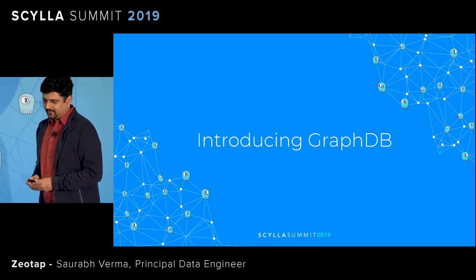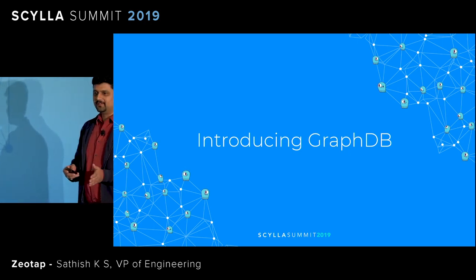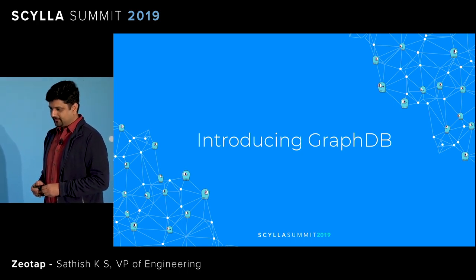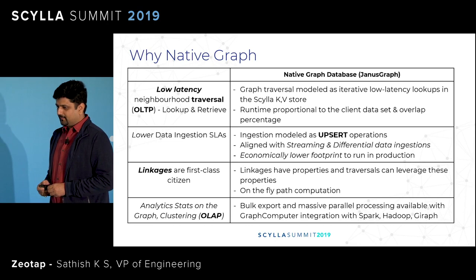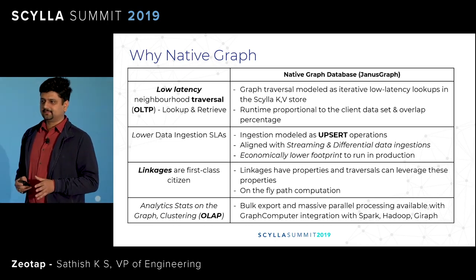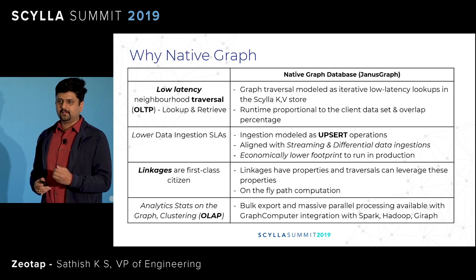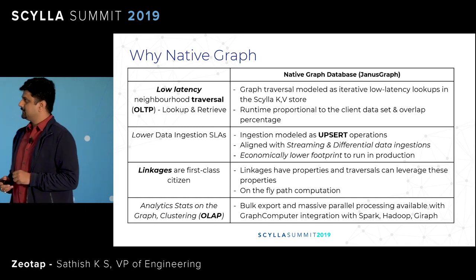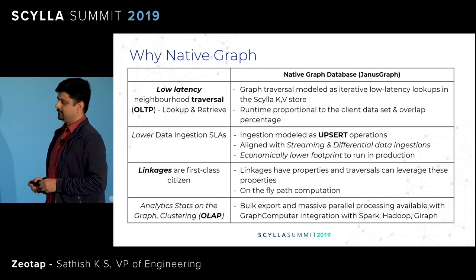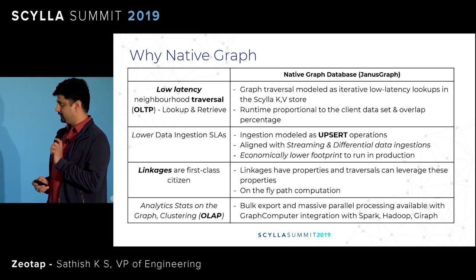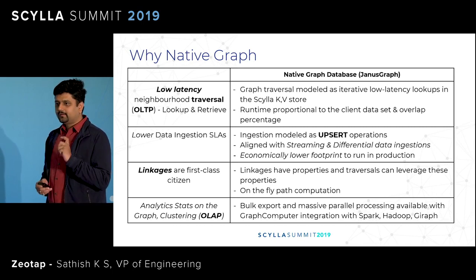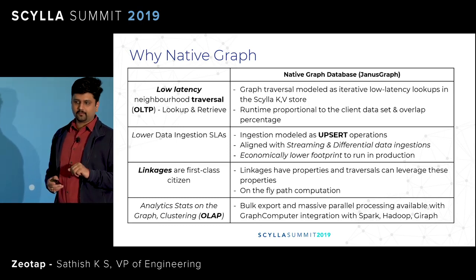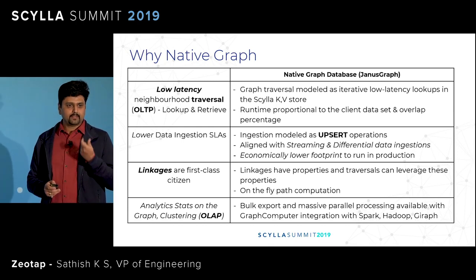I'll be mostly taking care of the data modeling and the data store selection. Let's start with introducing GraphDB. As mentioned, the context is about reaching the maximum number of IDs which are directly or indirectly connected to an input ID. A graph database suffices for us because it gives us four properties. The foremost requirement is that we should be able to traverse the neighborhood of a given ID in the least time possible, and at the scale of 15 billion, the latency for each lookup needs to be subseconds. Otherwise it will add up to our SLA and be poorly accepted in the market.